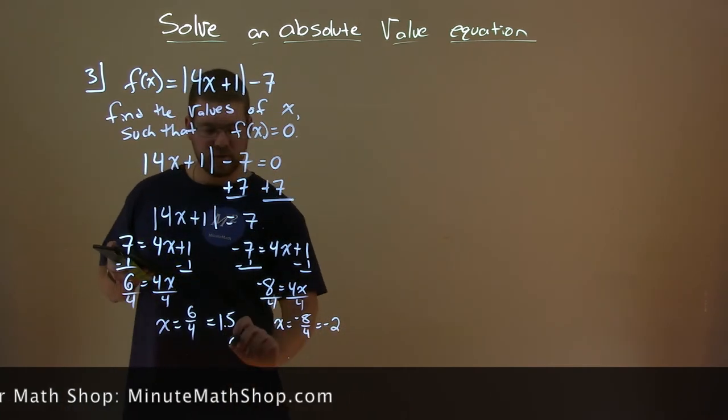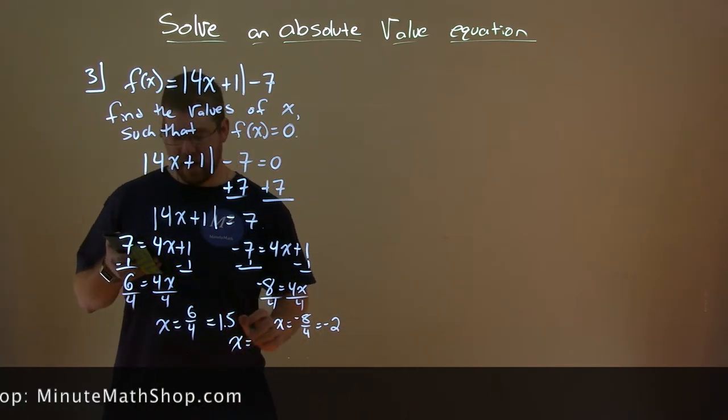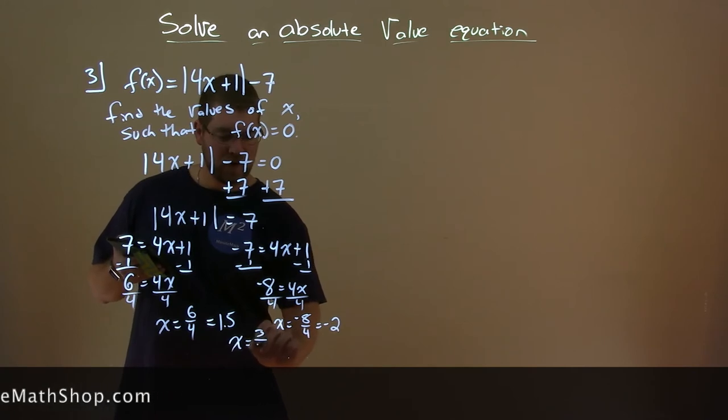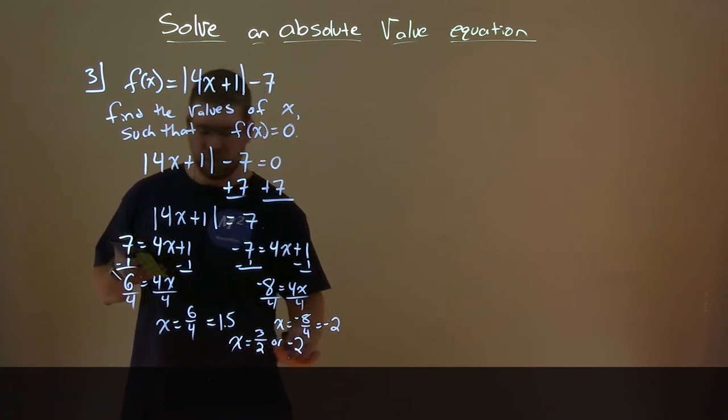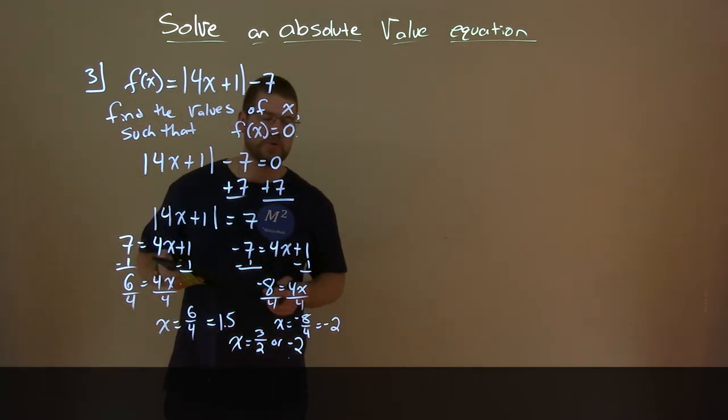If you want to keep them in fraction forms here, 1.5 is the same as 3 halves. So, x equals 3 halves, or negative 2. Alright? So, those are our two values there.